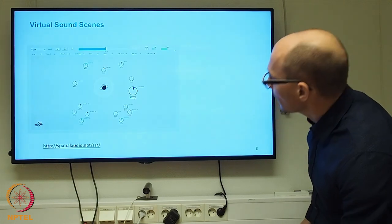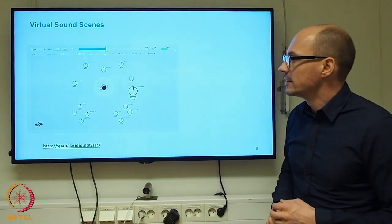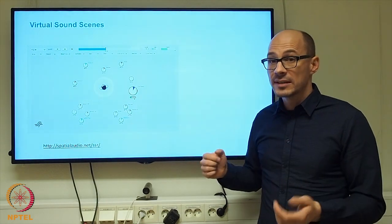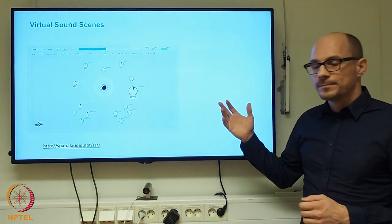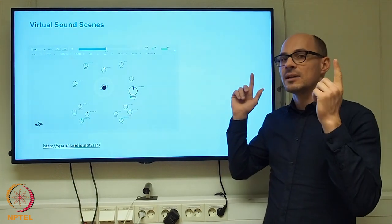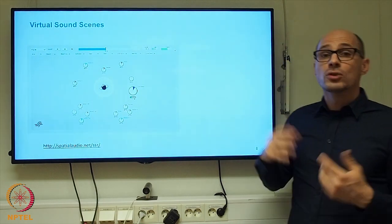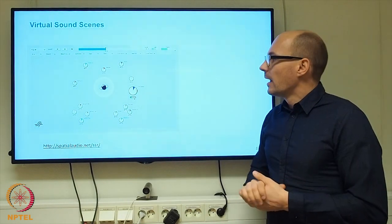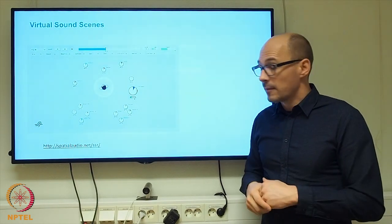So if we then use a software that can impose these transfer functions onto a signal, for example, a signal that we record with a microphone, like my speech or a music signal, if we're filtering this signal with the data that we had measured previously, then we are imposing all the acoustic cues, so the interaural timing differences and the spectral differences onto that source signal. For example, my voice, and the user will then localize, will hear the signal at the location that corresponded to where the loudspeaker was in the measurement.